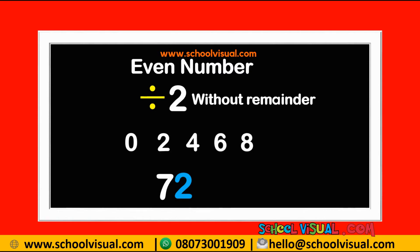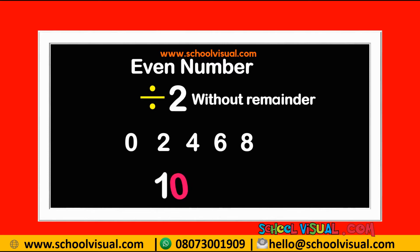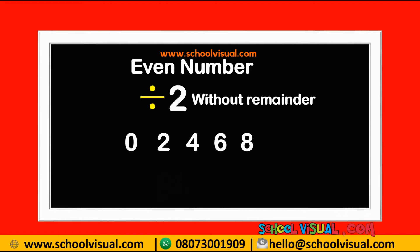If you look at this number, the last digit is what we said — so it is an even number. Look at this one — the last digit is what we said as well. So an even number is an integer that can be divided by two without a remainder.